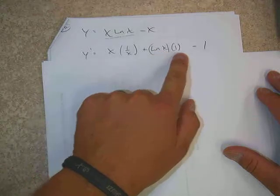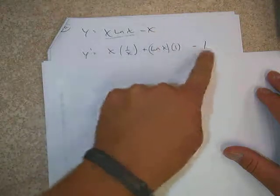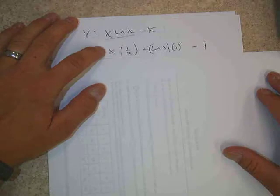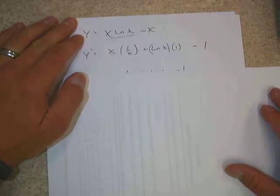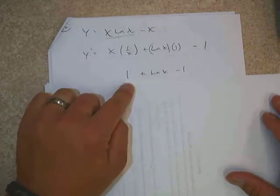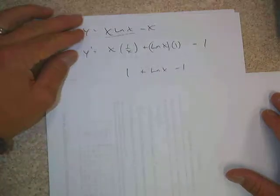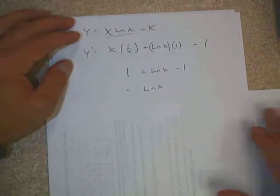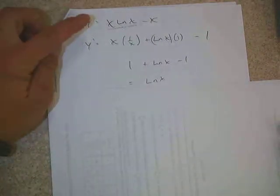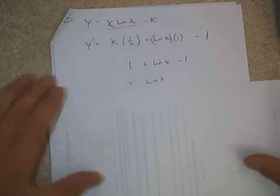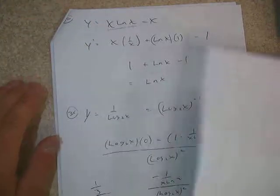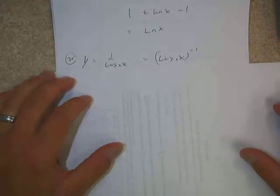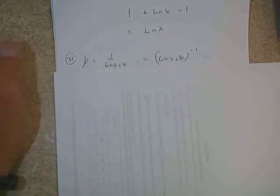For x·ln(x) minus x: recognizing a product between x and ln(x), we apply the product rule — first times the derivative of the second plus the second times the derivative of the first, then minus 1. We get x times 1/x plus ln(x) times 1, minus 1. That simplifies to 1 plus ln(x) minus 1, so the final answer is simply ln(x).